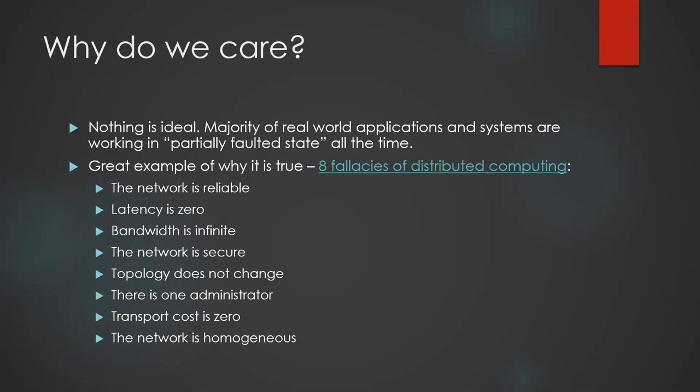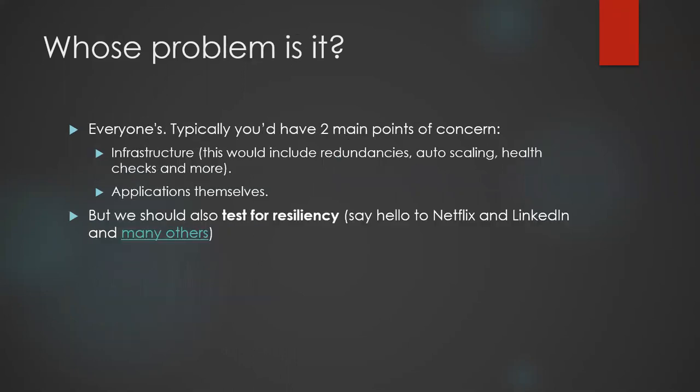Those eight fallacies of distributed computing are great examples of why we should always plan for failures and why it's important to make sure that whatever software we are building, it's built in a resilient way. Whose problem is it? Who should care about resiliency? The answer is everyone. Typically you'll have two main areas of focus: first is infrastructure, which includes redundancies, auto scaling, and health checks. But that is not the topic of this conversation — I'd like to talk about the applications themselves and how we plan for faults in the code base.